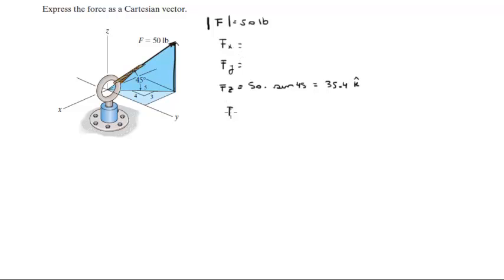Now we can find the projection of F along the XY plane, which is this vector right here. It's given by 50 cosine of 45, which is the exact same thing—35.4—since cosine of 45 and sine of 45 are equal.